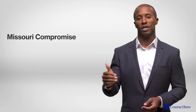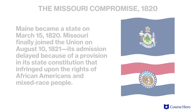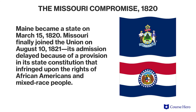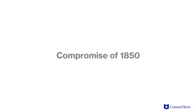This Missouri Compromise helped maintain the balance of free and slave states in the Union. Maine became a state on March 15, 1820, and Missouri finally joined the Union on August 10, 1821, its admission delayed because of a provision in its state constitution that infringed upon the rights of African Americans and mixed-race people.